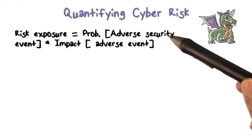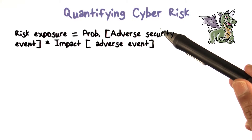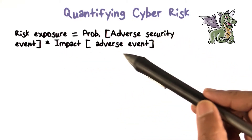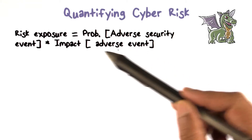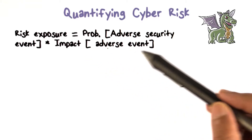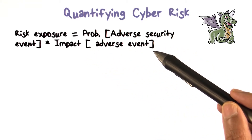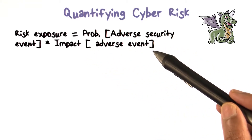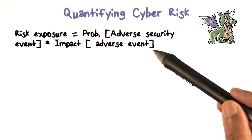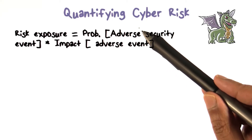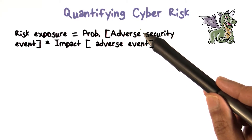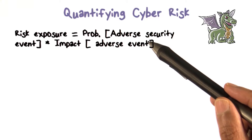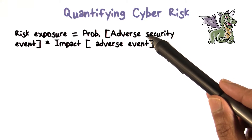So what is the likelihood of that? You have to have the probability, then multiply by the impact of that adverse event. If it's going to cost me $10 million to deal with that and the probability is half, that's way too much. But if the probability is half and it's going to cost you $10 million, your risk is $5 million.